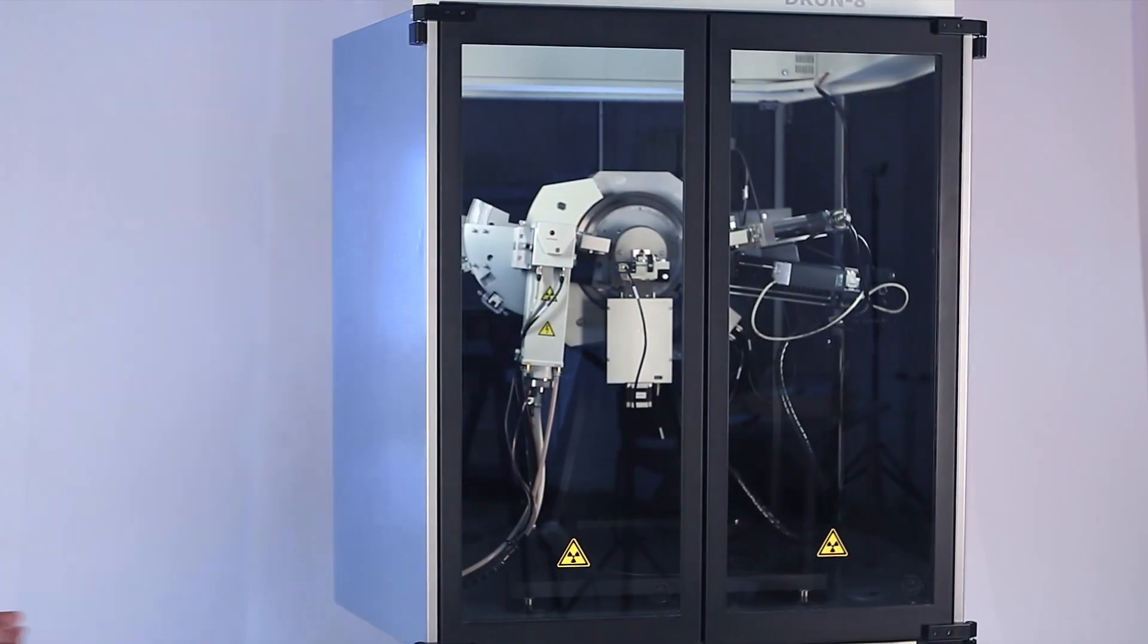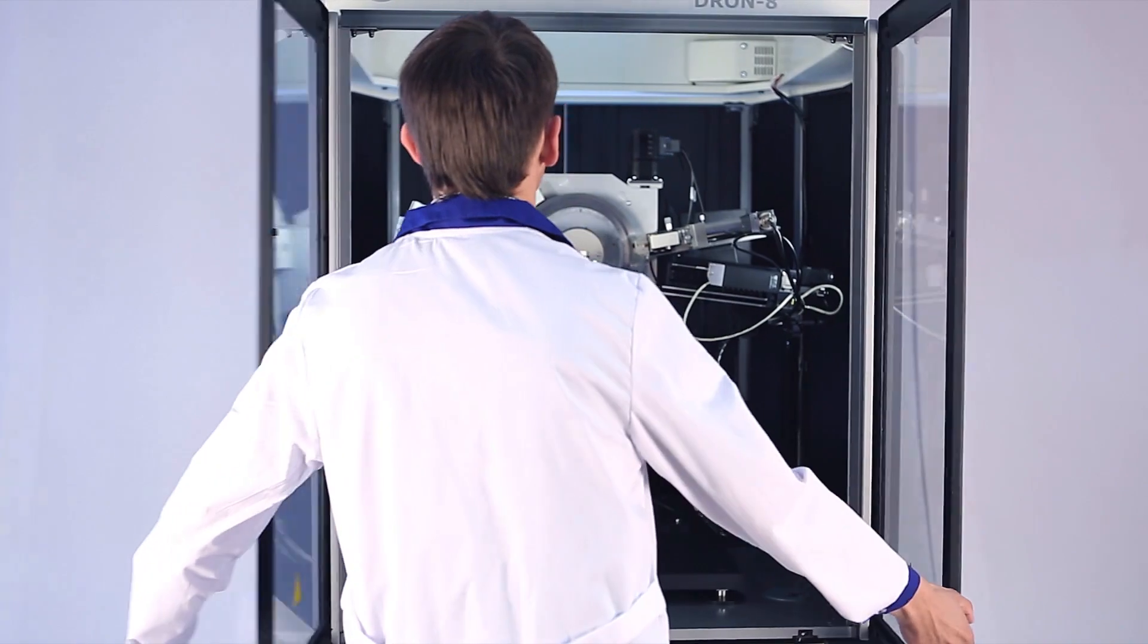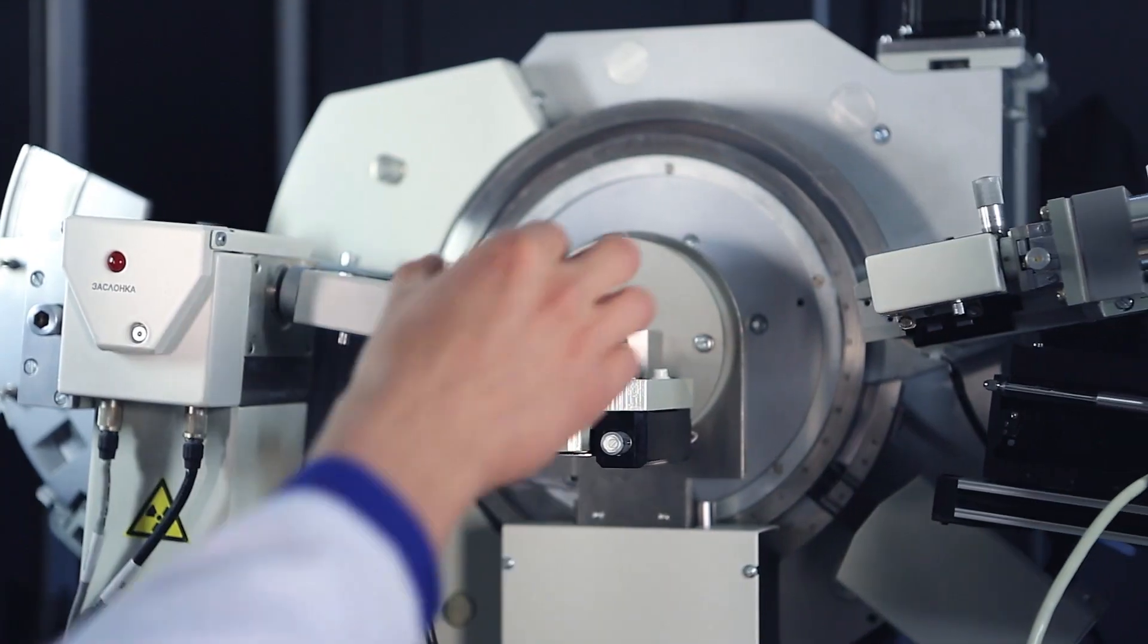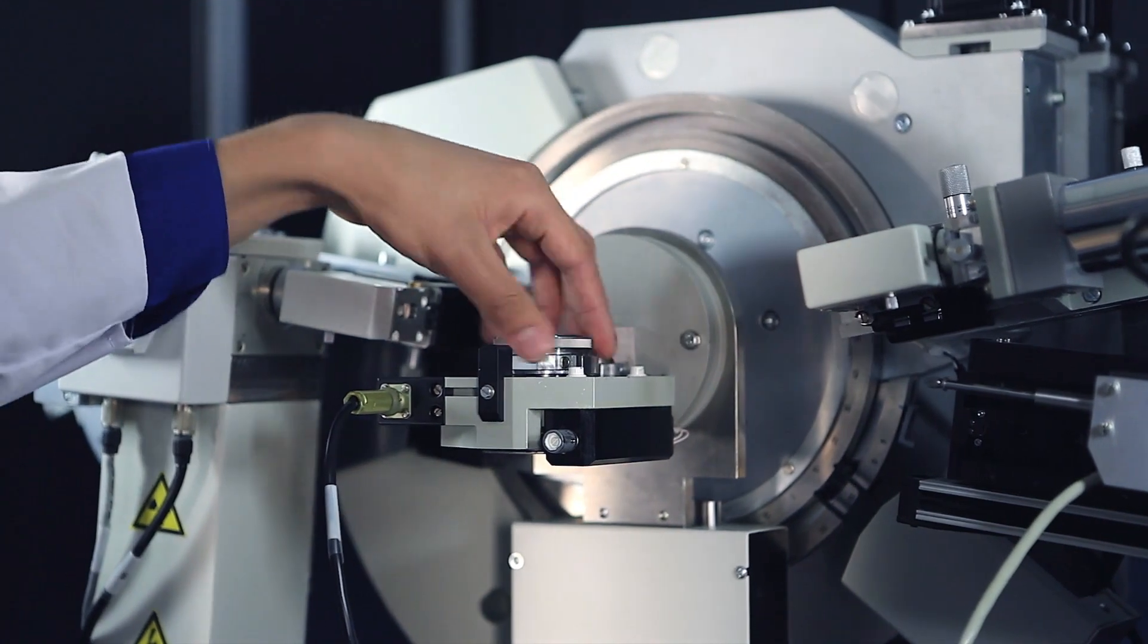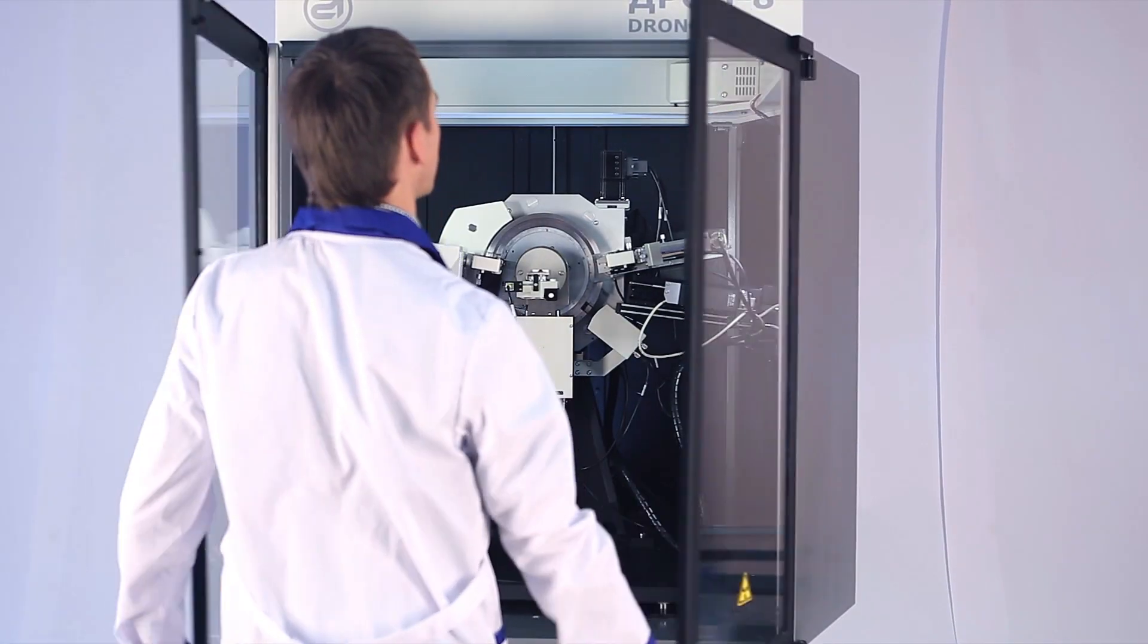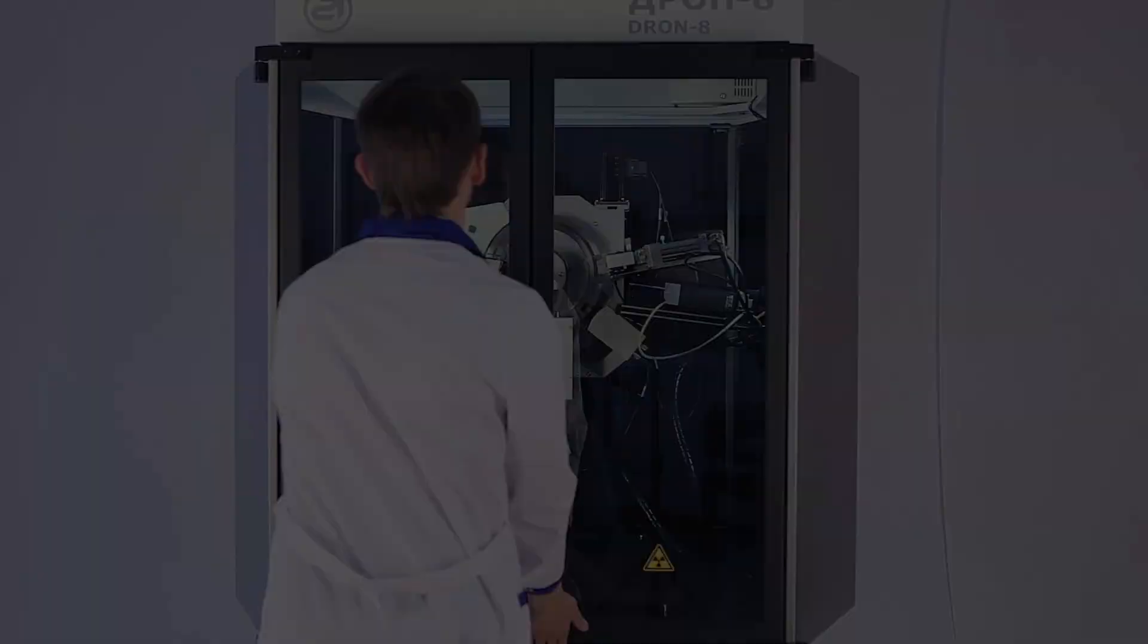The diffractometer is equipped with vertical theta-theta goniometer. The sample always remains in horizontal position during measurement. It provides examination of samples in different physical states with different dimensions and shapes.